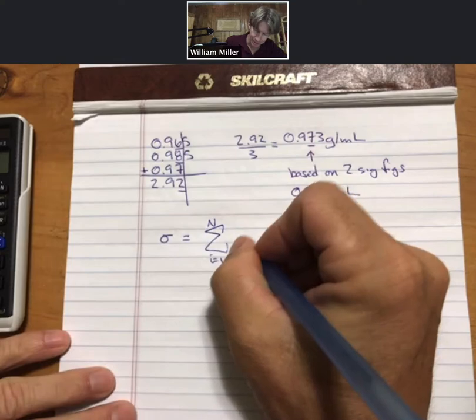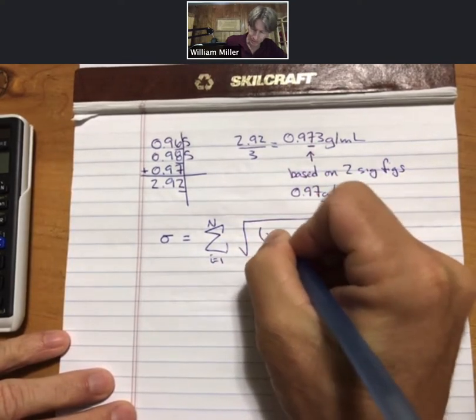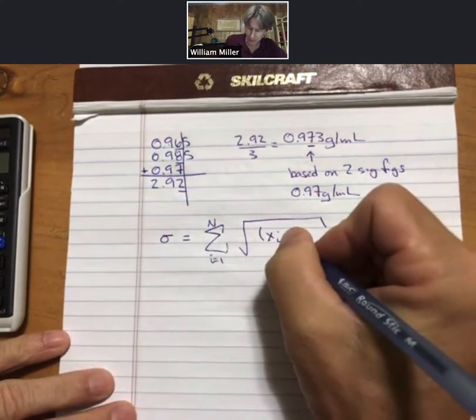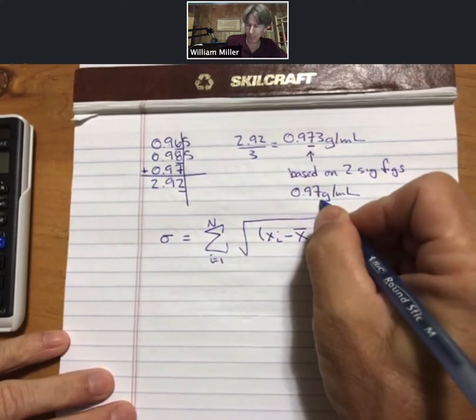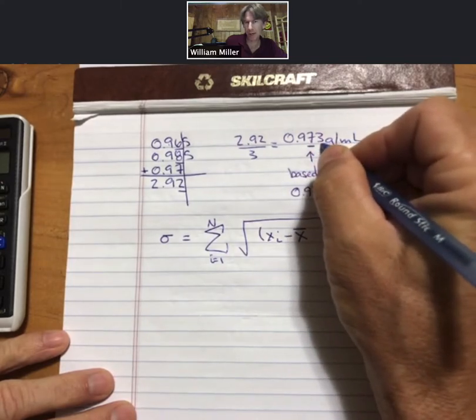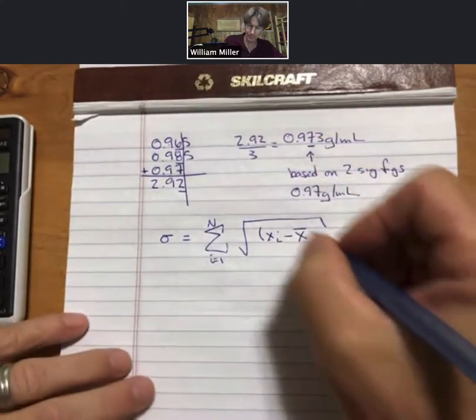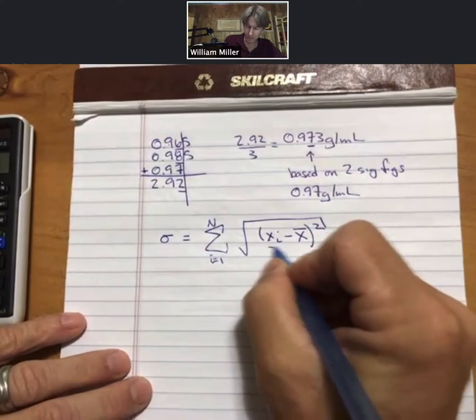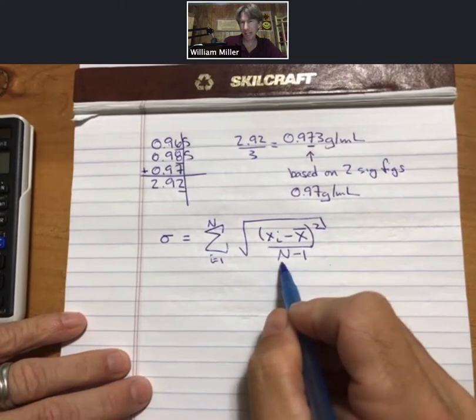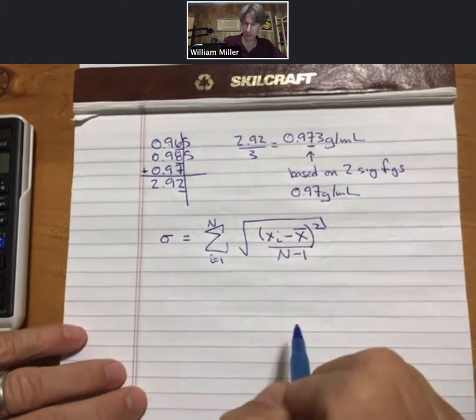Take the square root of xi, which is each individual value, minus x-bar, or x-bar is the average. And even though we only have two sig figs here, we are going to carry all of our digits through our calculations and use the underscore technique. Square that and then divide by n minus 1. And for this lab it's 3, so 3 trials, n minus 1, this number will turn out to be a 2.